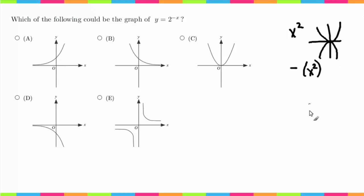For example, x squared looks something like this, and then if you have negative x squared, this flips it this way. So that's an example of a parent function and its transformation. In this case, the parent function would be y equals 2 to the x, and then this negative is going to do something to this graph.